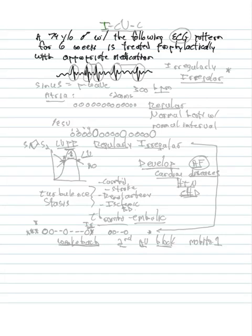Welcome to the discussion, part of Integrated Clinical Finance with Dr. Carlo Raj. Last week we looked at a patient. Our patient was the following: a 74-year-old male with the following ECG pattern for six weeks, treated prophylactically with appropriate medication.